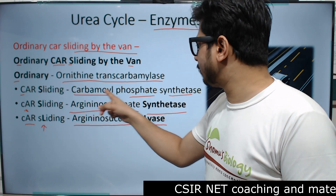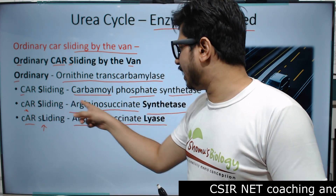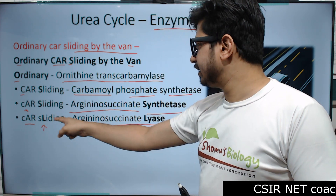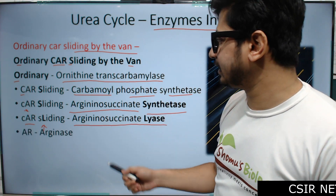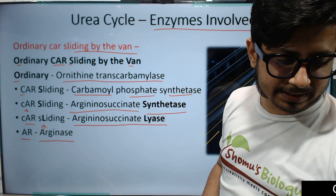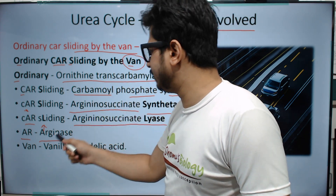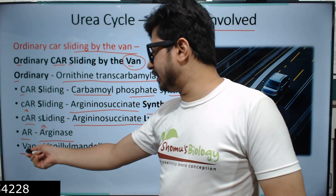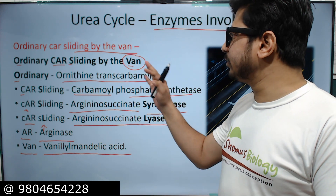So to recap the four enzymes so far: O for Ornithine Transcarbamylase, C for Carbamoyl Phosphate Synthetase, AR for Argininosuccinate Synthetase, and L for Argininosuccinate Lyase. The last part — 'Van' — represents Arginase, AR for Arginase.